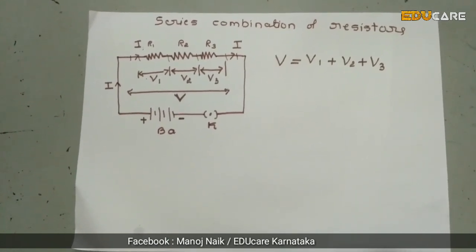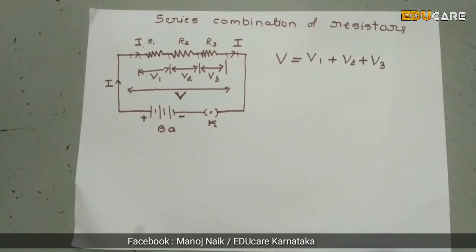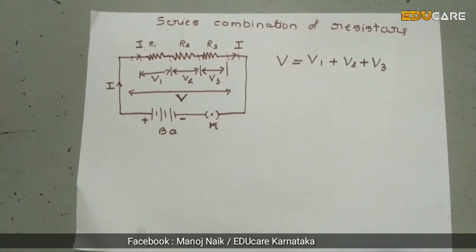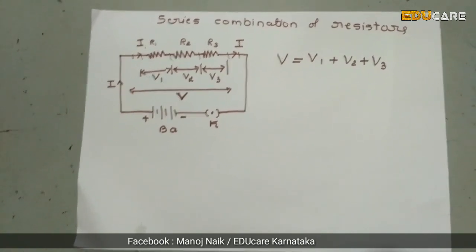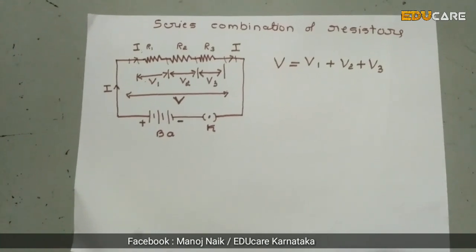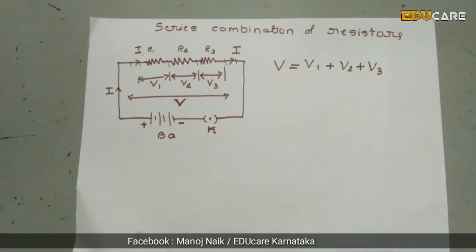So the equation is V is equal to I into R. Here, V is equal to potential difference, I is equal to electric current, and R is equal to resistance.